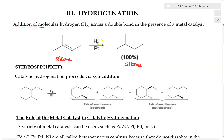By taking an alkene and reacting it with hydrogen in the presence of a metal catalyst — and there are several types of catalysts we will discuss later — a metal catalyst is a very common way to perform hydrogenation reactions.